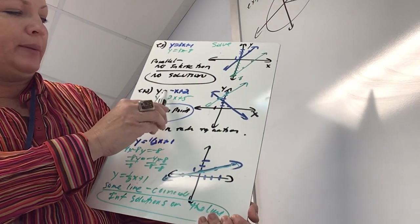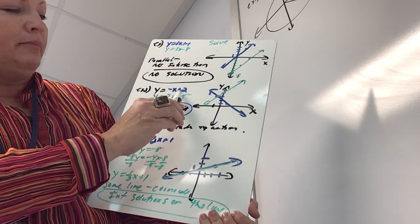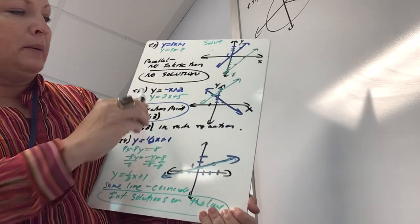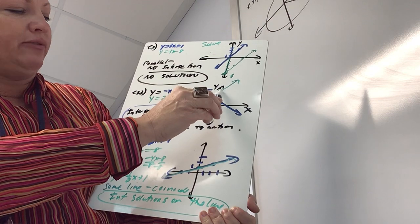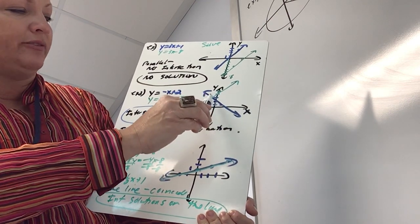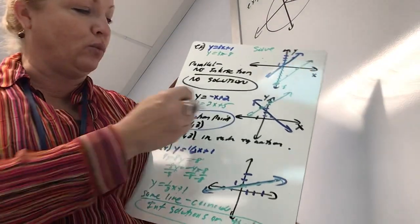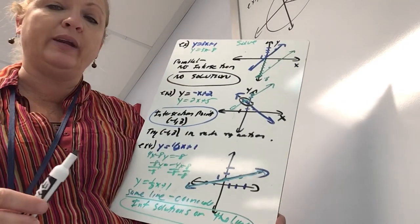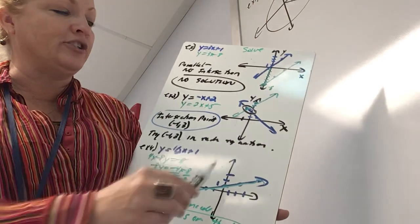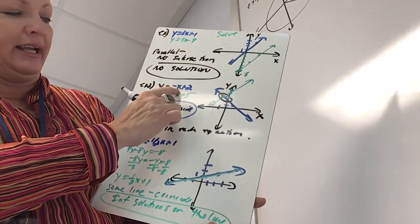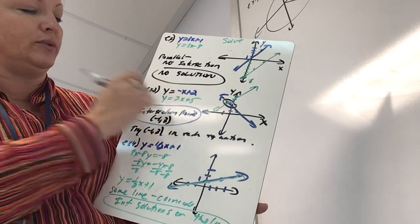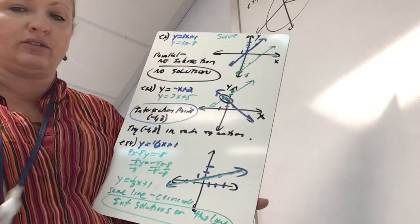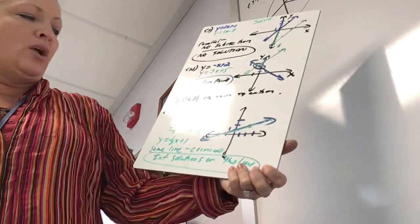Example three: the blue equation is already in slope-intercept form with y-intercept 2 and slope negative 1. The green equation has y-intercept 5 and slope 2. They intersect at (negative 1, 3). Checking: negative(negative 1) plus 2 equals 3 ✓, and 2(negative 1) plus 5 equals 3 ✓. So (negative 1, 3) is the solution.